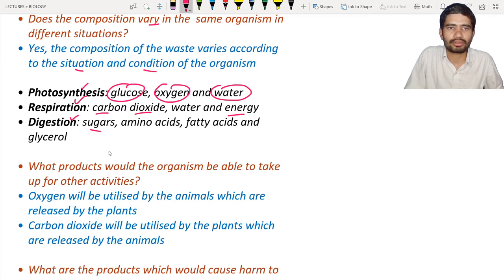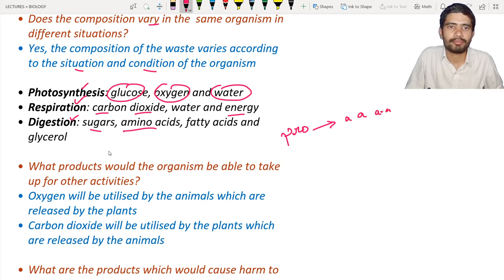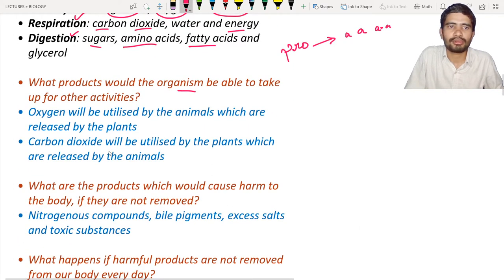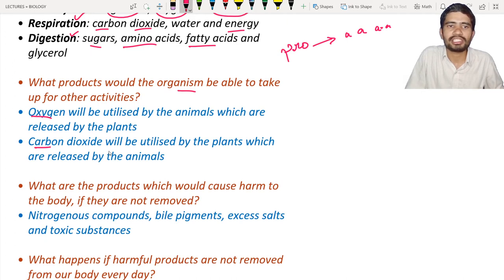Digestion also produces amino acids from the breakdown of proteins, and fatty acids and glycerol from the breakdown of fats. Regarding oxygen and carbon dioxide: organisms require oxygen for living, which is released by plants. Animals utilize that oxygen and in turn release carbon dioxide, which is taken up by plants.